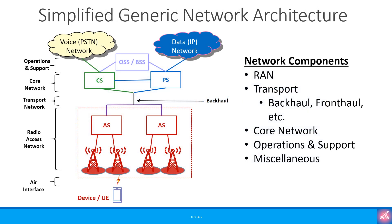Here is the generic mobile network architecture that you have seen in our tutorials previously. Without going too much into technical details, we can say that at a high level the network components include radio access network or RAN, transport which includes all hauls like backhaul and fronthaul etc., the core network, operations and support, and everything else can be put into the miscellaneous bucket.